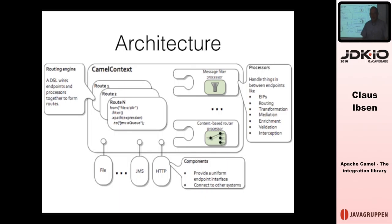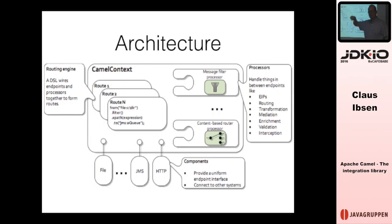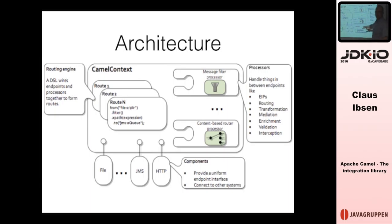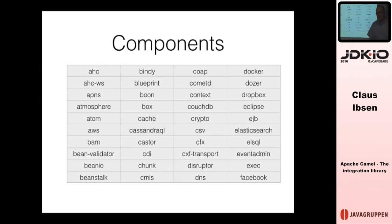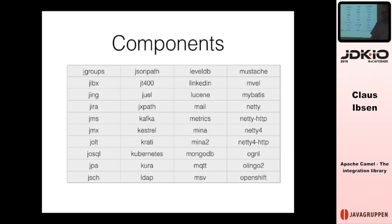What is the high-level architecture of Camel? In the center you have the Camel context — that is the runtime Camel. You can add routes to Camel, and in these routes you can use enterprise patterns for business processes, message enrichment, transformation, and so on. Then you use components to integrate with the outside world: ActiveMQ, JMS, file, FTP, HTTP, and so on. In fact, there are so many components in Camel that we have multiple slides with tables of component names and they just keep going.